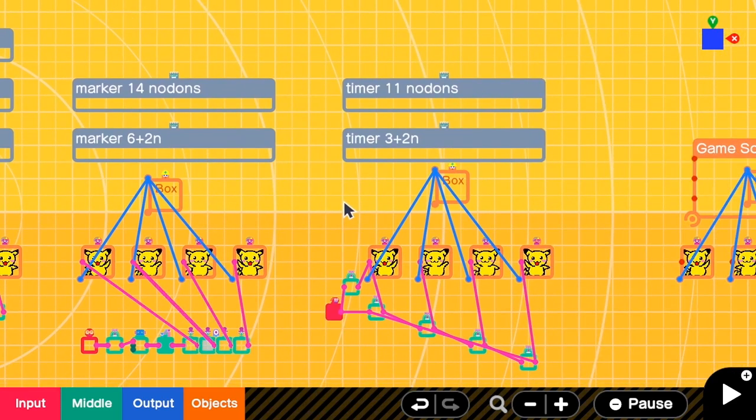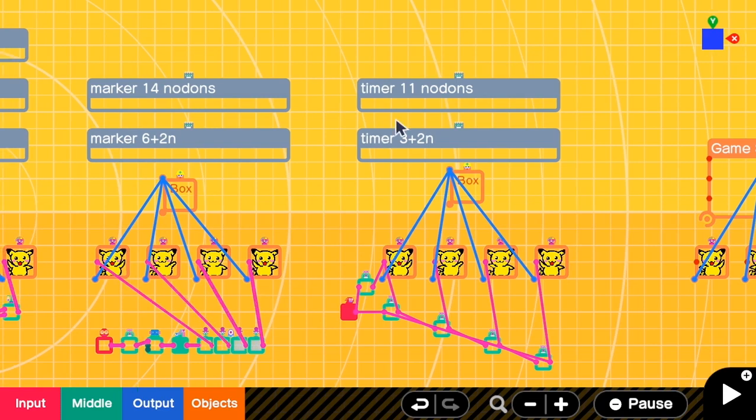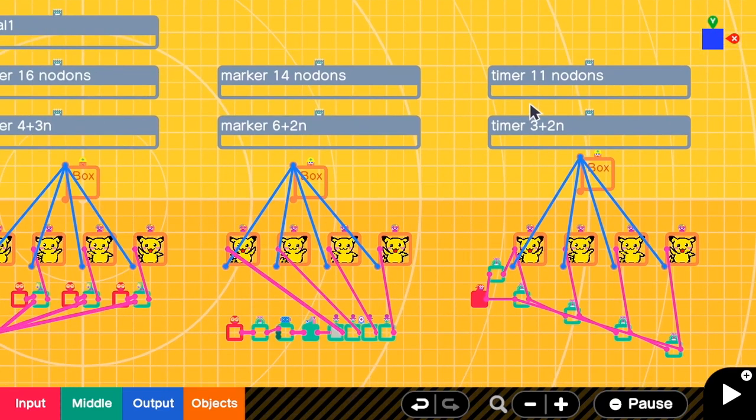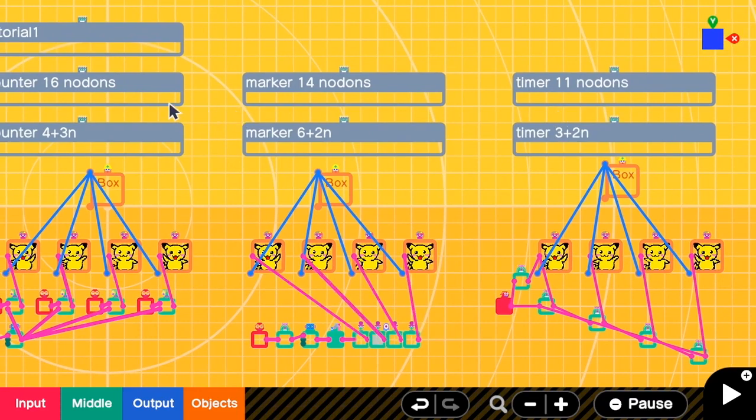But after I discovered the timer method from Nintendo Japan, and I know about this from watching Video Dojo's stream, please check it out. You can see that the number of nodons becomes 11 nodons. The amount of reduction is around 30% from the counter method.